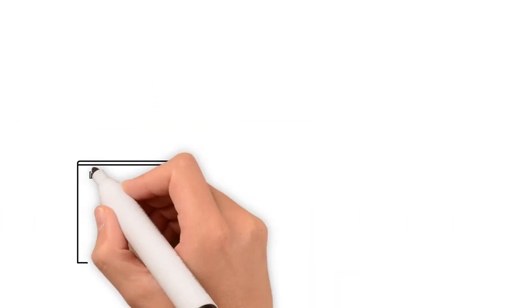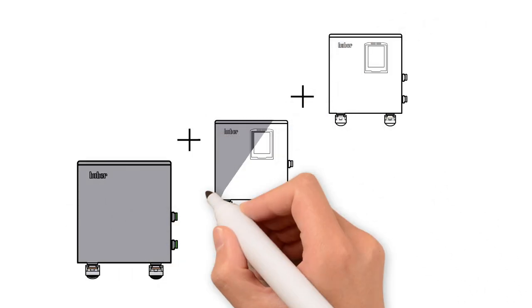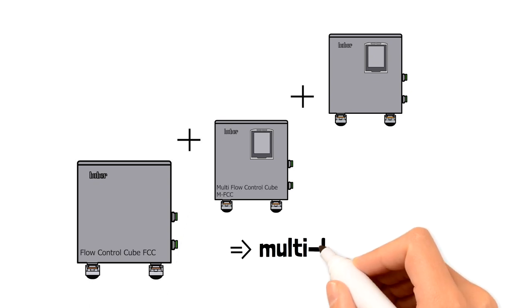Unimotive is also convincing when it comes to flow control. The separately available flow control cubes enable reliable measurement and control of flow and pressure in the temperature control circuit.